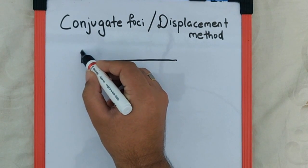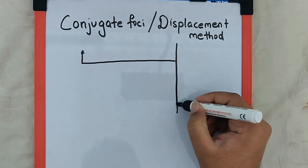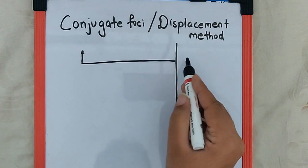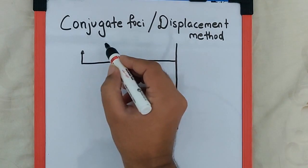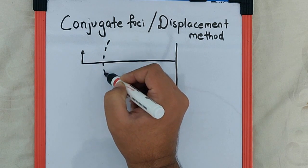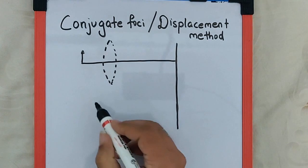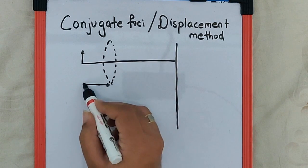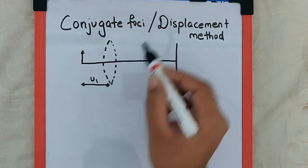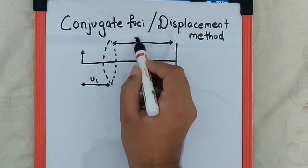the object is kept at one position and a screen is placed at some distance from the object. If the lens is positioned at one point such that the object distance becomes U1 and the image distance becomes V1,